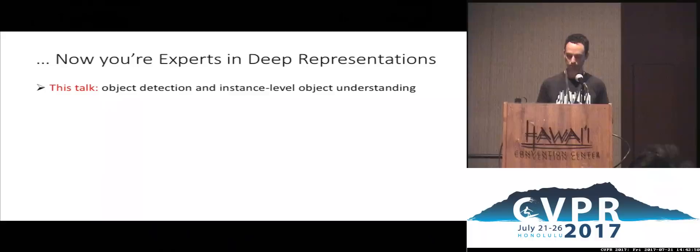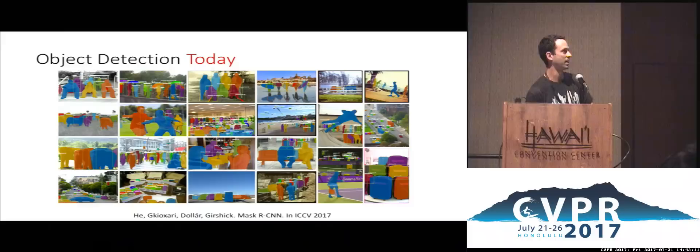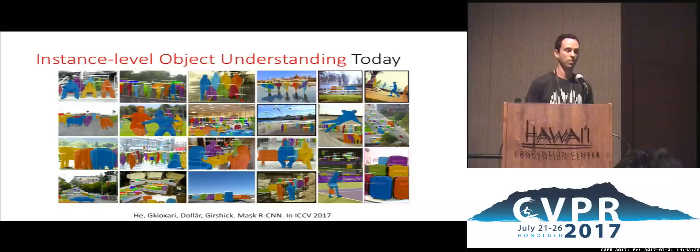The talk will cover MaskRCNN, which produced those visualizations, and then a brief survey of the current landscape of object detection using deep learning. The task is instance segmentation. Object detection puts boxes around detected objects — five boxes means exactly five instances. Semantic segmentation labels each pixel but loses the notion of individual instances: all person pixels get lumped together. Instance segmentation takes the best of both worlds — pixel-level precision while retaining the notion of individual instances.